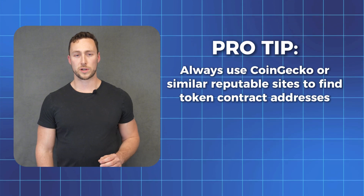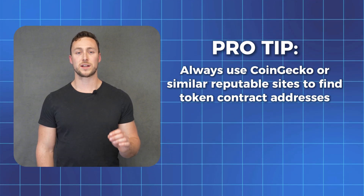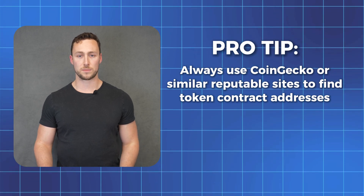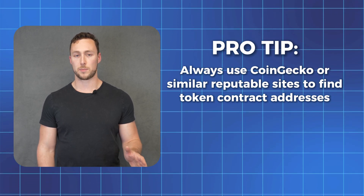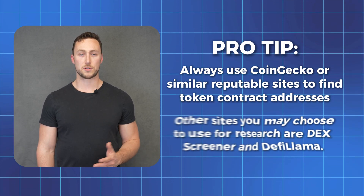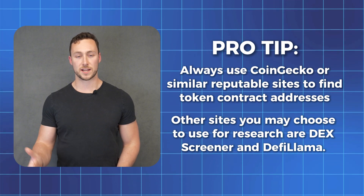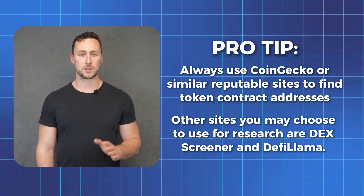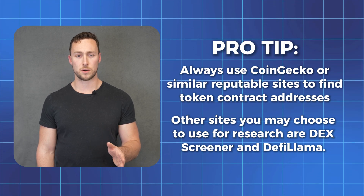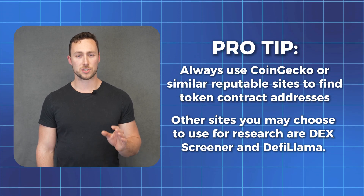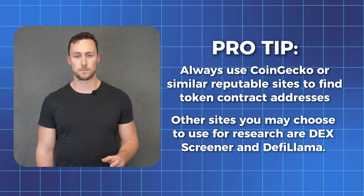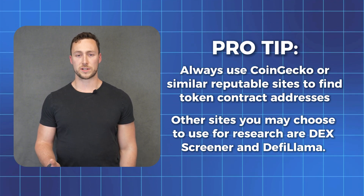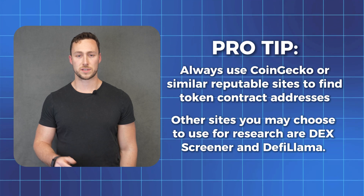Pro tip: always use CoinGecko or similar reputable sites to find token contract addresses. Don't just copy addresses from social media or chat groups — that's how people end up buying fake tokens and getting scammed. Other sites you may use for research are Dex Screener and DeFi Llama. You can also use these platforms to track emerging tokens and understand market trends. But remember, just because a token is listed on CoinGecko doesn't automatically make it a good investment — always do your own research beyond just the numbers.